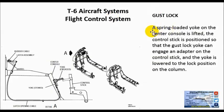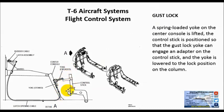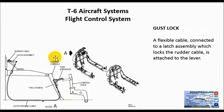The gust lock is basically a spring-loaded yoke on the center console. We lift it up, and the control stick is positioned so the gust lock yoke can engage an adapter on the control stick. The yoke is lowered to lock the control stick into position. So on a windy day after the aircraft is parked, your flight control surfaces won't just be beating around. A flexible cable is connected to a latch assembly which locks the rudder cable and is attached to the lever — it keeps the rudder flight control surface in position.